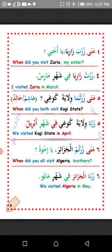Number six: Mata zurtum al-Jazair ya ikhwa? When did you all visit Nigeria, brothers? Note: al-Jazair here means Nigeria, not Jordan. The answer: Zurtum al-Jazair fi shahari Abril — we visited Nigeria in the month of May. La'allaka fahimt? I hope you understand. Masha'Allah.